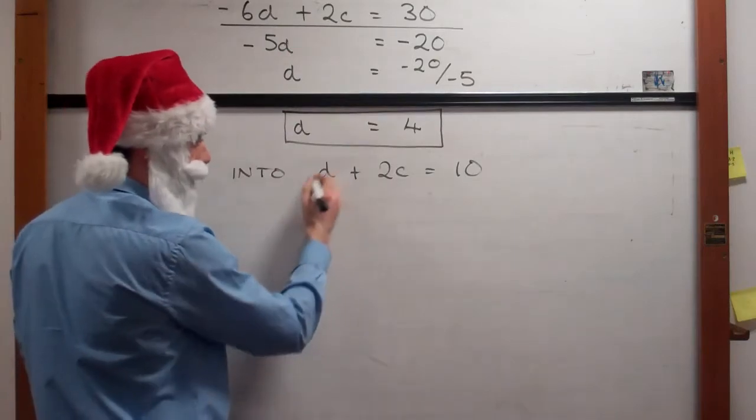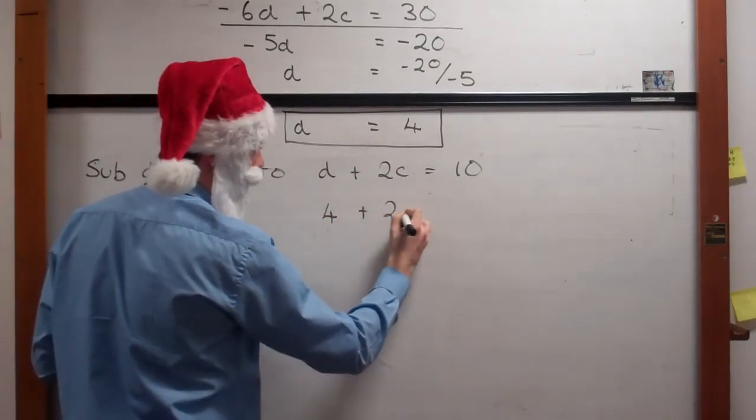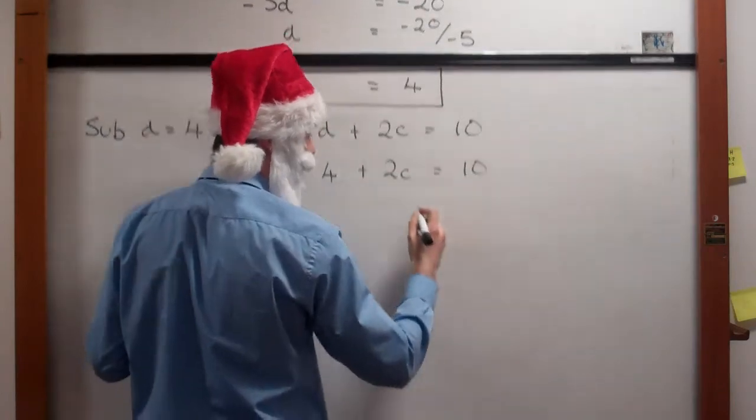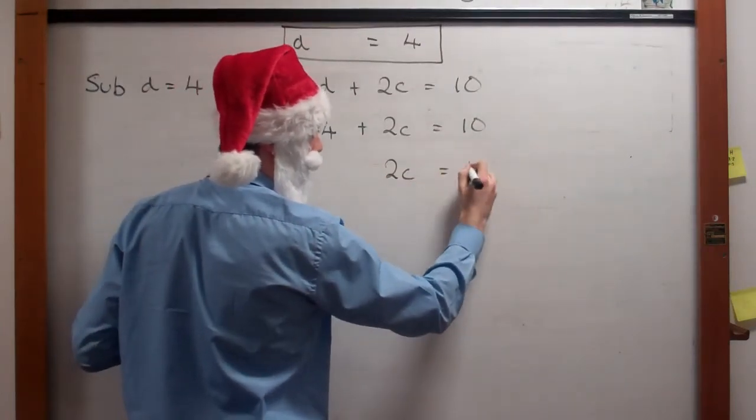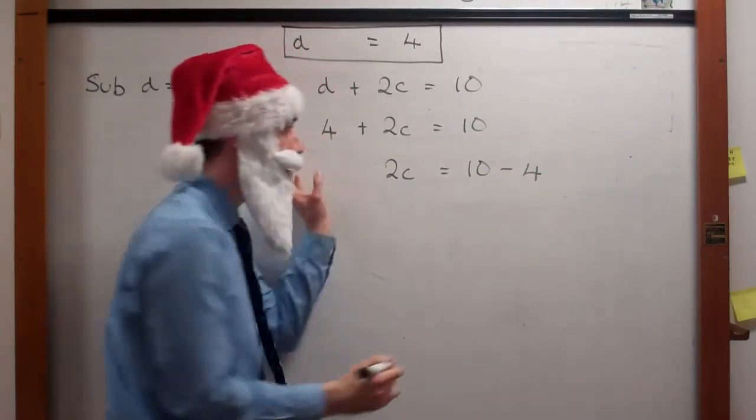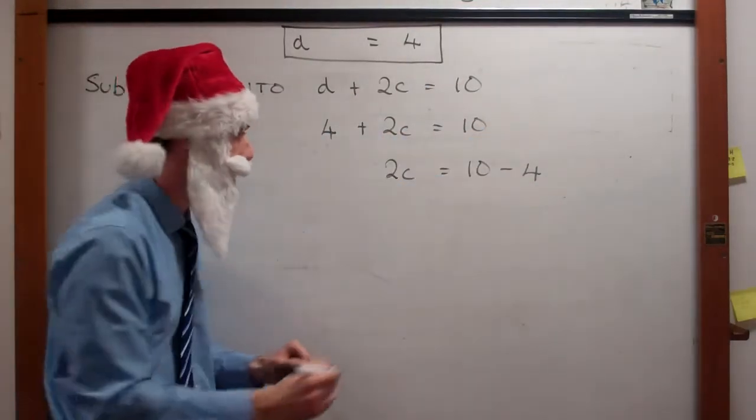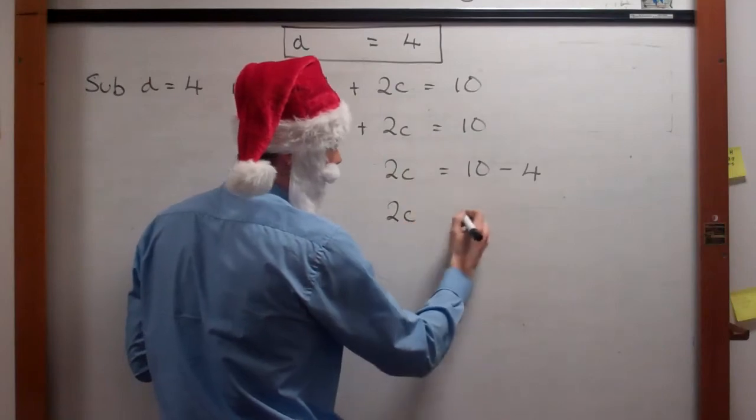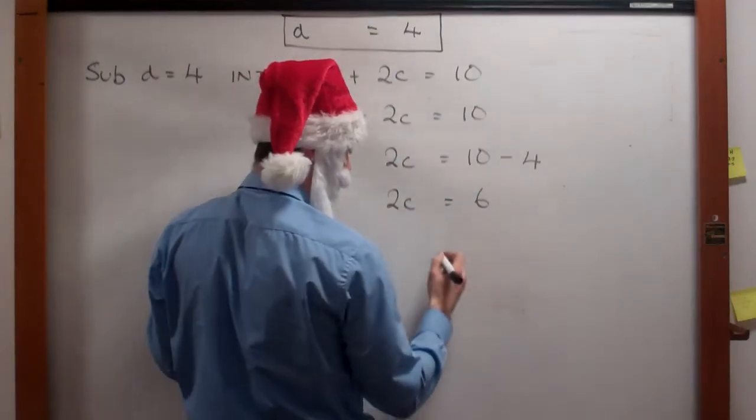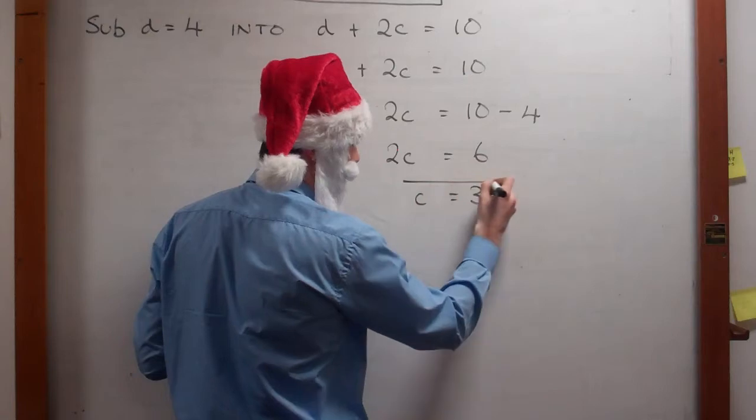So we have D. Instead of D we put 4 because we substitute. So 4 plus 2C is equal to 10. We want to bring the 4 over to the other side. We change its sign when we change its side, and then 2C equals 6. So that's nice and simple. C equals 3.